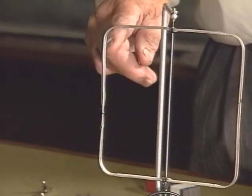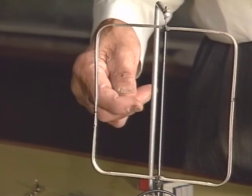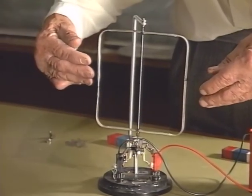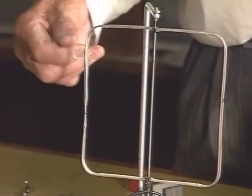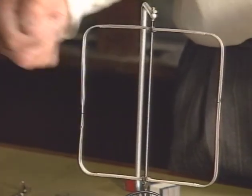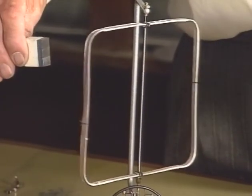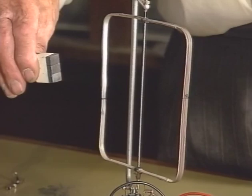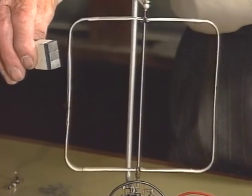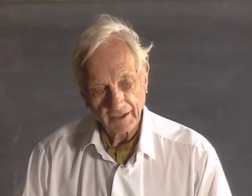Here we have a rectangular coil. If the current goes down in one side, then it will be coming up on the other. Now if I arrange a magnetic field across there, the force will be away from me on the one side and towards me on the other — just like turning the handlebars of your bicycle. So now I put a magnetic field across there — you see there's a torque on the coil and it just will go round. And that, of course, is the basis of the electric motor.